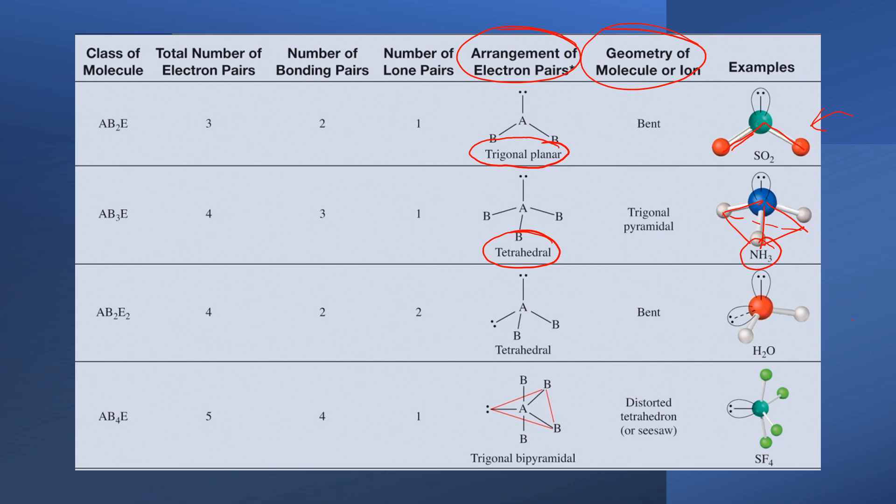Just the atoms at play have trigonal pyramidal geometry. This trigonal pyramidal geometry does arise from the fact that it's tetrahedral with respect to its electron pair geometry.